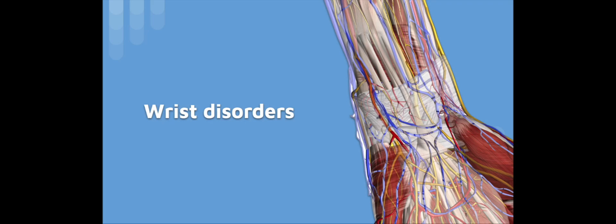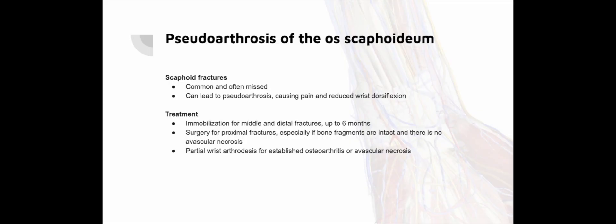Wrist disorders: The wrist is a complex joint made up of eight carpal bones arranged in two rows. Ligaments connect these bones to each other, the forearm and the metacarpals. The first row consists of the scaphoid, the lunate, the pisiform and the triquetrum. The second row consists of the hamate, capitate, trapezium and trapezoid. The scaphoid and the lunate bones are especially vulnerable to injuries. Late consequences of wrist injury include pseudoarthrosis of the scaphoid, carpal instability and disorders of the ulnar disc and triangular fibrocartilaginous complex.